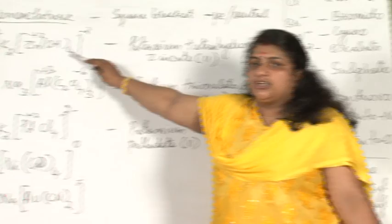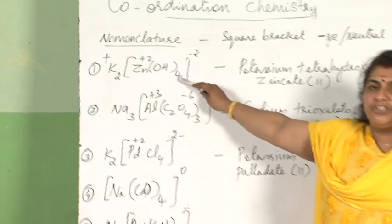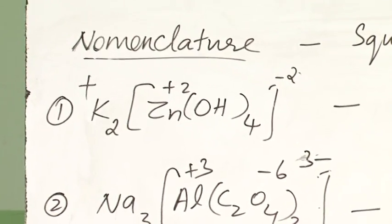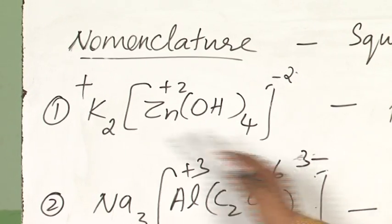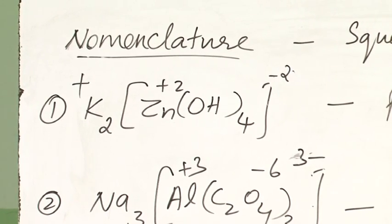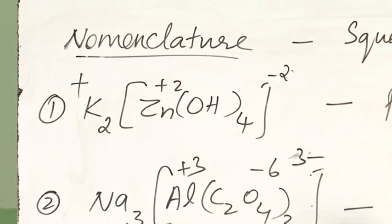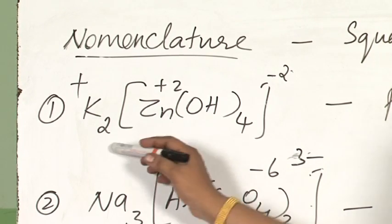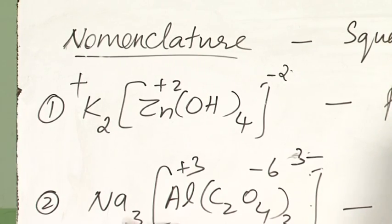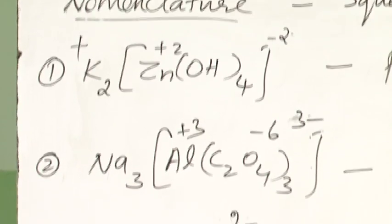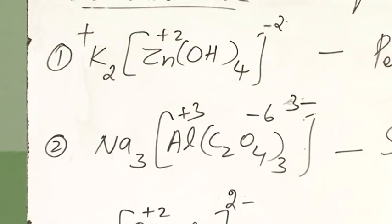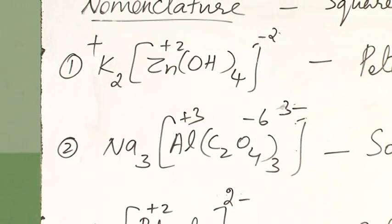The first coordination compound you are seeing — you have to name it from the left end to the right end. The counter ions are named as they are: if it is potassium, we call it potassium; if it is sodium, we call it sodium. No need to specify how many potassium there are.